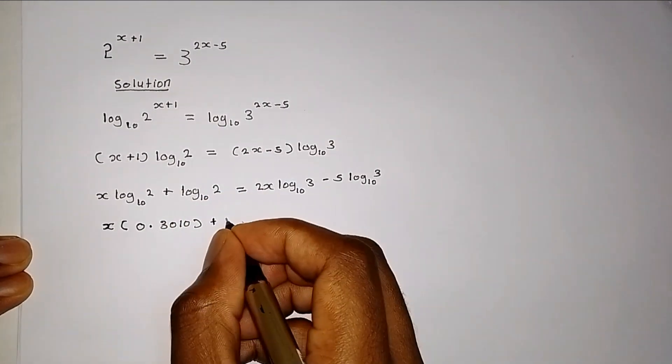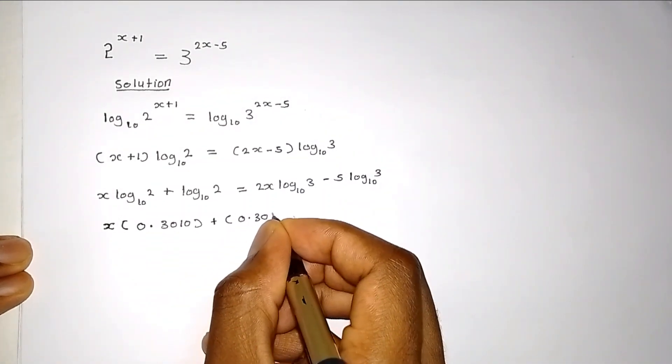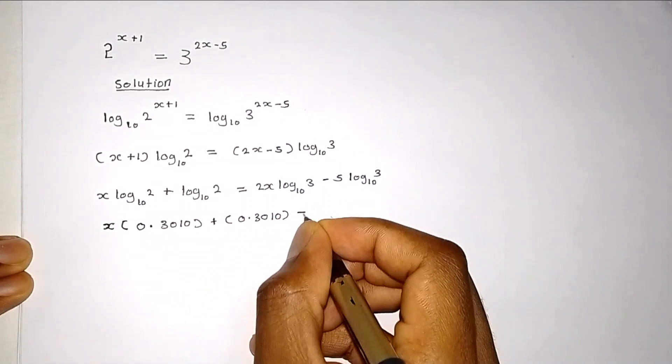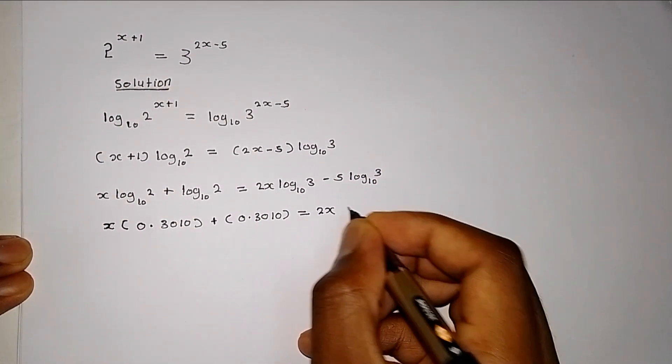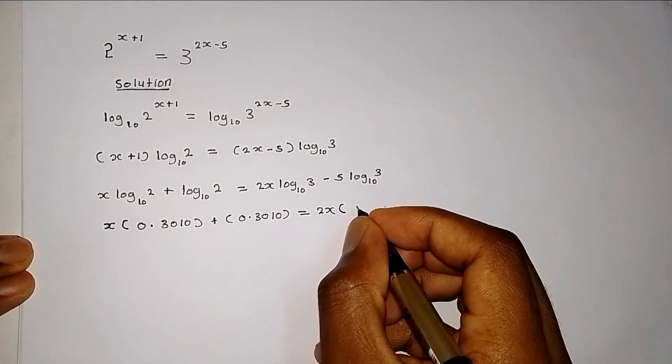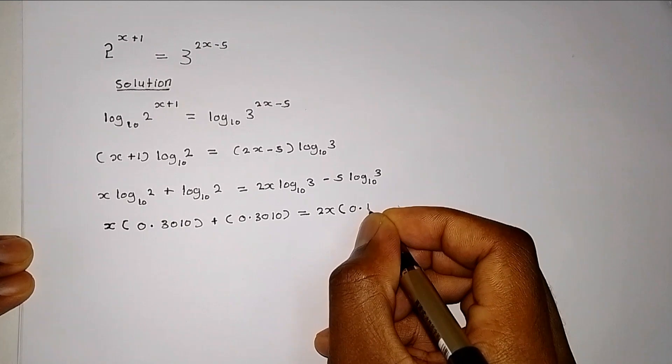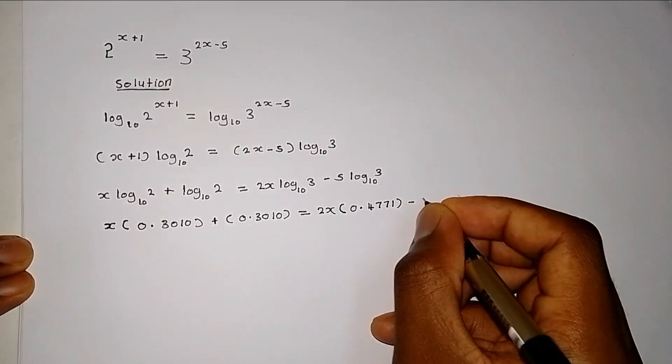Then plus, this is the same, which is 0.3010, which will give us 2x, because x is unknown, multiplied by the log of 3 to base 10, which gives us 0.4771 minus 5.